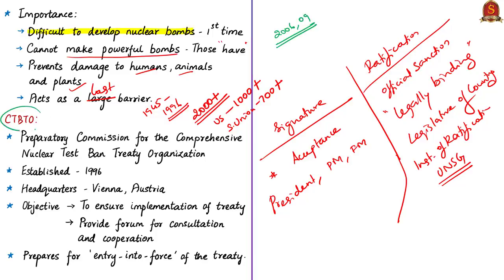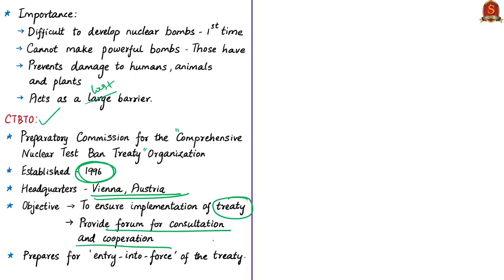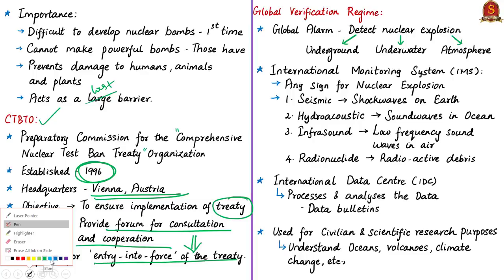The CTBTO stands for Preparatory Commission for the Comprehensive Nuclear Test Ban Treaty Organization. It is an international organization established by the signatory states on 19th November 1996, headquartered in Vienna, Austria. Its objective is to achieve the aims of the treaty, ensure implementation of its provisions including international verification of compliance, and provide a forum for consultation among member states. It promotes the treaty, prepares for its entry into force, and establishes a global verification regime.